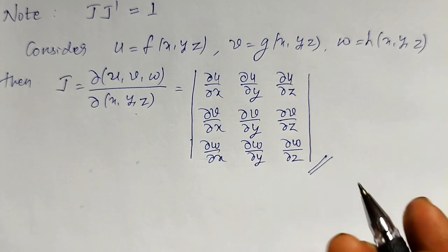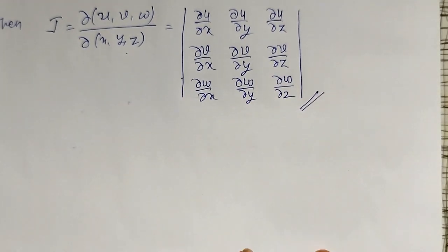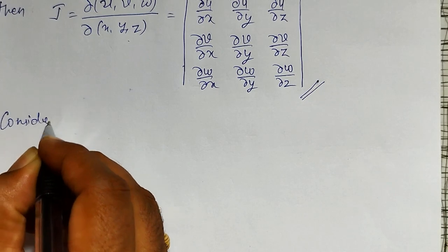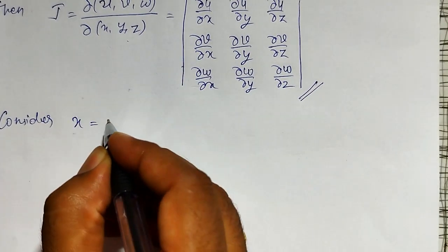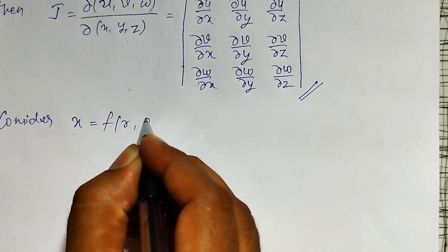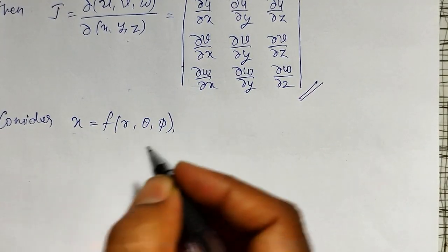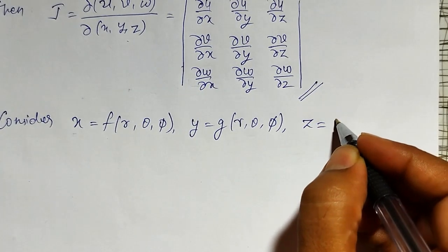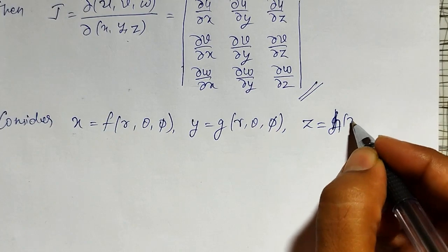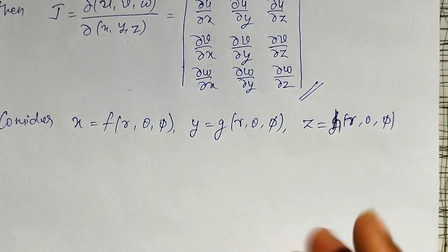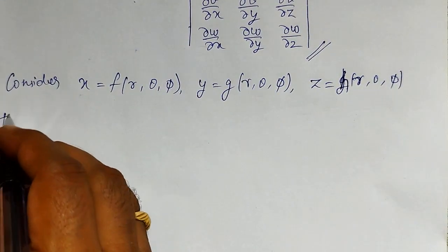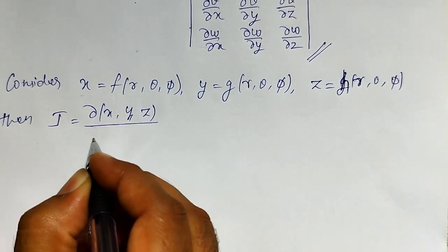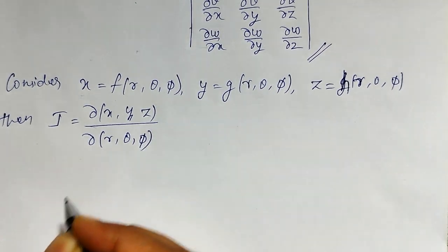This is how to define the Jacobian. Consider another example: x is a function of r, θ, φ; y is also a function of r, θ, φ; and z is also a function of r, θ, φ. Then the Jacobian J equals dou of x, y, z with respect to r, θ, φ, and it is again a third-order determinant. The first row is the partial derivatives of x with respect to r, θ, φ: dou x by dou r, dou x by dou θ, dou x by dou φ.